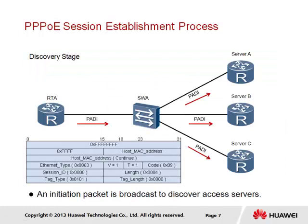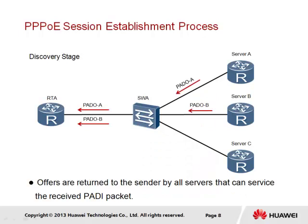We now look at the PPPoE session establishment process to better understand each protocol packet. The PADi packet initiates the discovery stage. In this example, RTA represents the customer edge and various servers represent BRAS devices. RTA must first identify the MAC address of the server and establish a PPPoE session ID. A PADi packet is generated containing service information and sent as a broadcast, received by any BRAS in range. Receiving servers compare the requested services to those they can provide, and those able to support the required services generate a PADO packet returned to RTA.